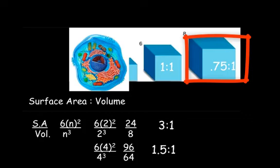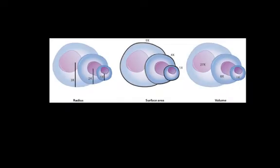And then at some point, the volume overtakes the size of the surface area. The cell cannot get the materials it needs in or out of the cell at an efficient rate for the cell to do its job.